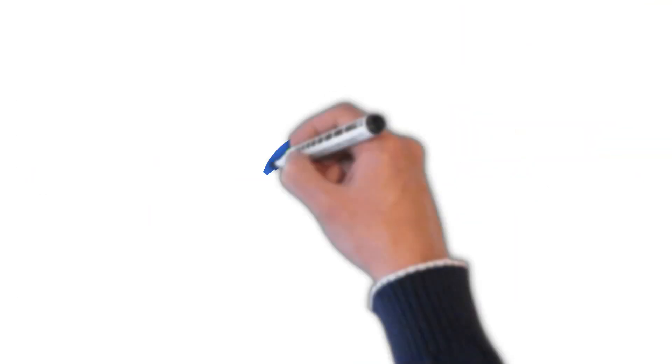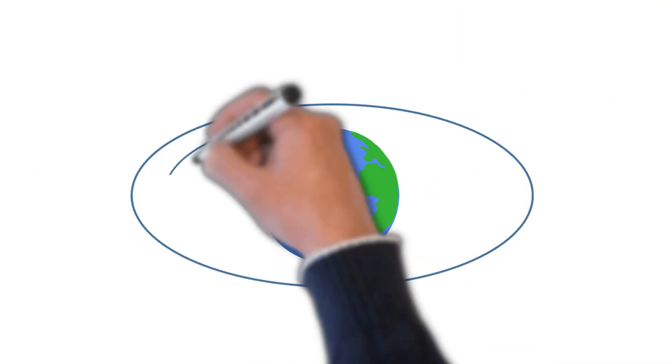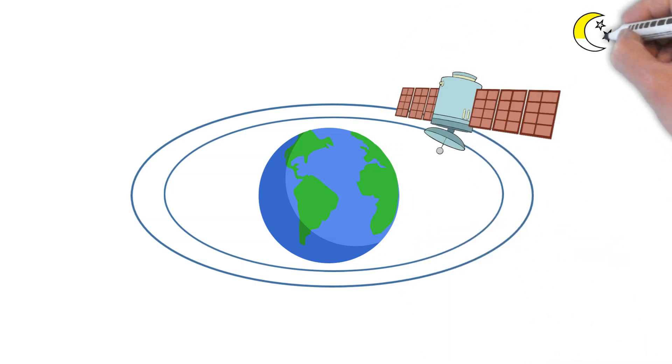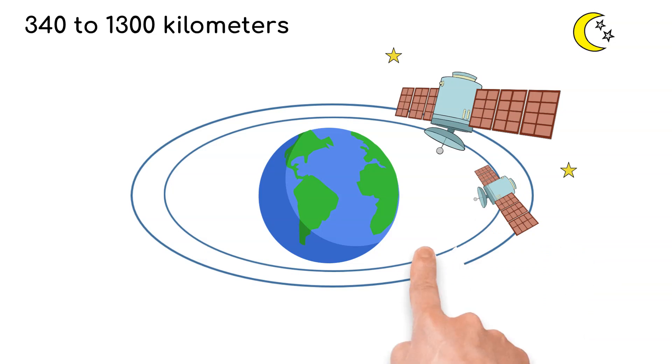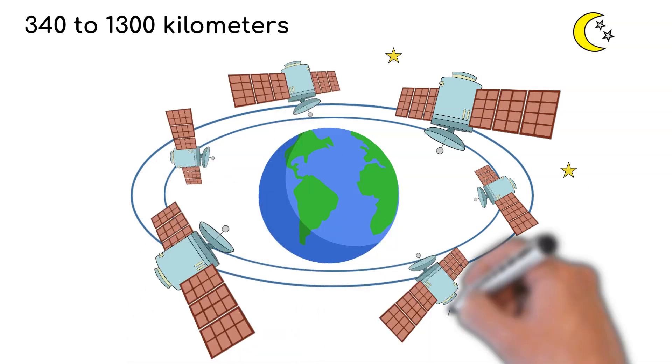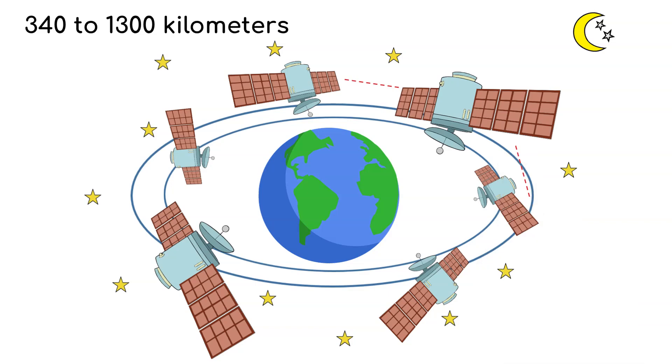Starlink is the satellite internet of today. SpaceX launches satellites into low Earth orbit 340 to 1,300 kilometers above the Earth's surface. So far there are 12,000 satellites communicating with each other via lasers at the speed of light.